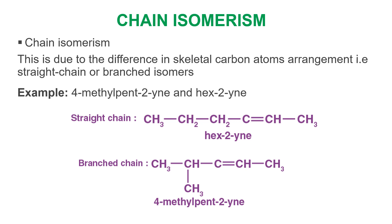In chain isomerism, this arises due to differences in skeletal carbon arrangements, meaning that from a straight chain we have a branching. A typical example is hex-2-yne and 4-methylpent-2-yne — these have the same number of carbon atoms but the first one is straight and the second one is branched, making them chain isomers.